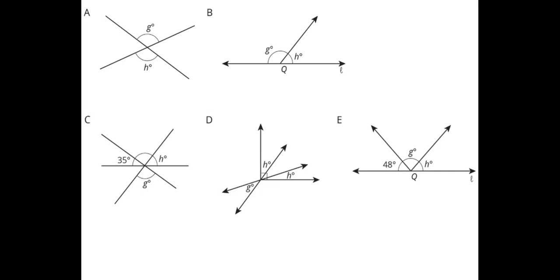Now let's look at five situations. For each one, we'll write an equation or number sentence. In situation A, angles G and H are vertical to each other, so G has to equal H. In situation B, the two angles form a straight line, so when combined they equal 180 degrees.